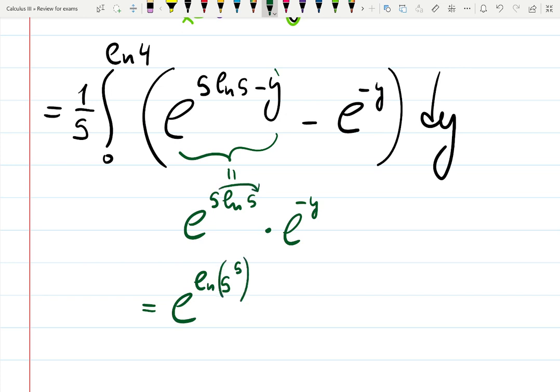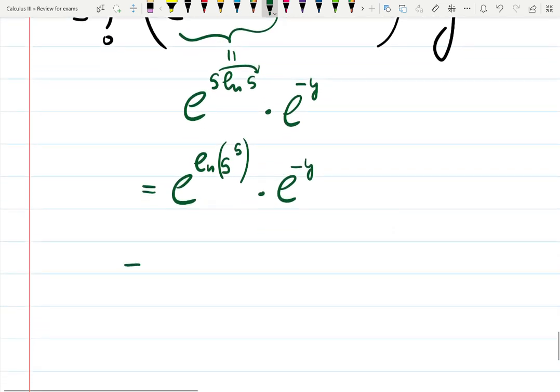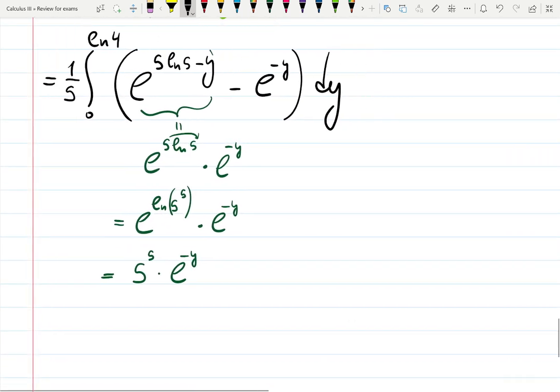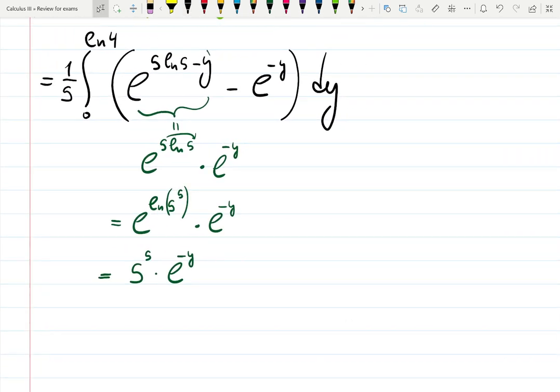Then this is e and then ln 5 raised to the 5, so it's 5 to the 5. Based on the property of the logarithmic functions times e to the minus y, but then e undoes ln so it's just 5 to the 5 times e to the minus y. Now we could factor out stuff, so I think it did. Instead of two integrals we will have only one.